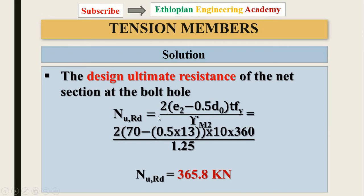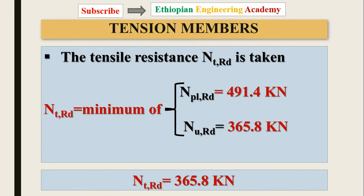The design ultimate resistance of the net section at the bolt is calculated using a formula slightly different from previous examples. This formula includes the eccentricity, the hole diameter, and thickness. Inserting the numbers gives the net section ultimate resistance. The tensile resistance is then taken as the minimum of the plastic resistance and the ultimate resistance — the minimum value is the governing tensile resistance.